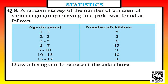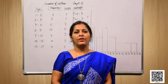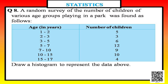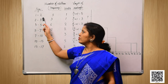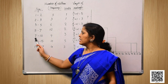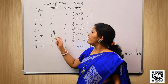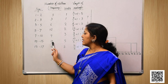Question number eight says: a random survey of the number of children of various age groups playing in a park was found as follows. The age in years starts from 1 up to 17, and the number of children (frequency) is given as 5, 3, 6, 12, 9, 10, and 4. They asked us to draw a histogram to represent the data.